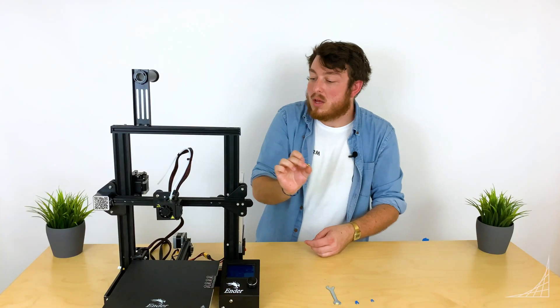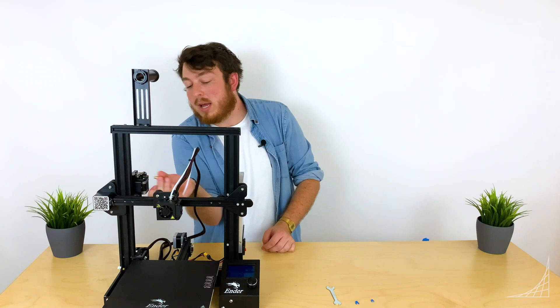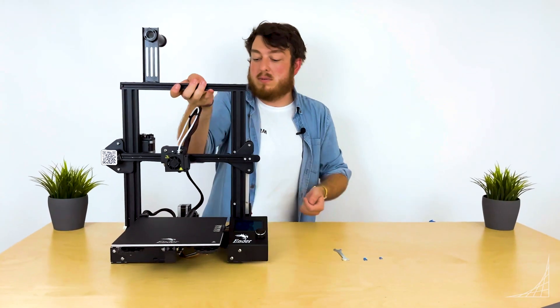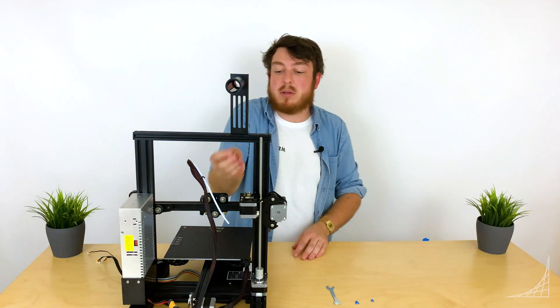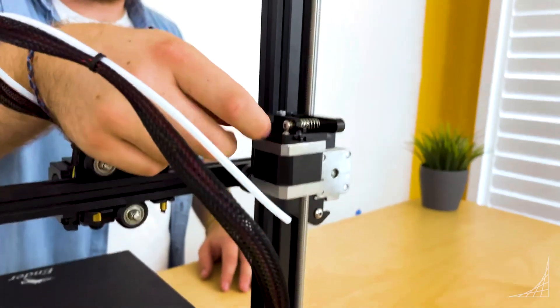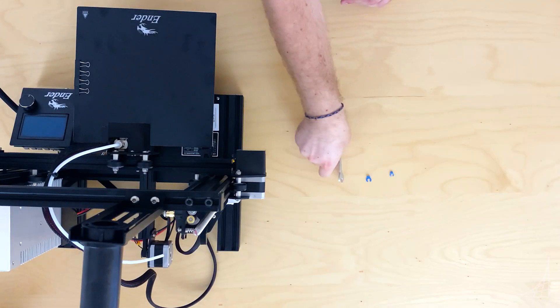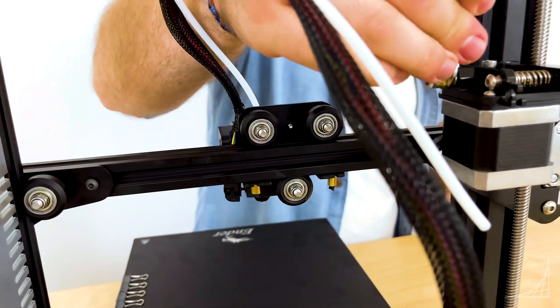We're going to start off on the cold end where we're going to be grabbing our little Bowden connector. I'll actually turn it front side for you guys, and we're going to be screwing it into the little brass fitting on our extruder. We can also take our double-sided wrench and tighten this up. It doesn't need to be ridiculously tight, just as tight as you can go.